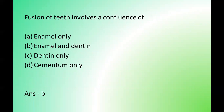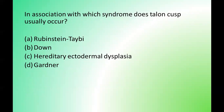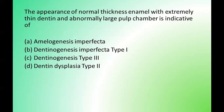Next question: in association with which syndrome does talon cusp usually occur? Options are: Rubinstein-Taybi syndrome, Down syndrome, hereditary ectodermal dysplasia, Gardner syndrome. The correct answer is option A — Rubinstein-Taybi syndrome. Next question: the appearance of normal thickness of enamel with extremely thin dentine and abnormally large pulp chamber is indicative of which condition? Options are: amelogenesis imperfecta, dentinogenesis imperfecta type 1, dentinogenesis imperfecta type 2, dentine dysplasia type 2. The correct answer is option C — dentinogenesis imperfecta type 2.